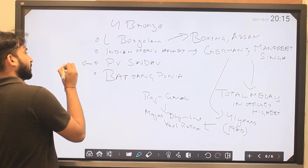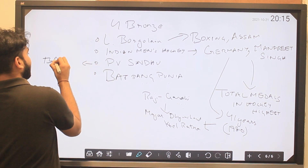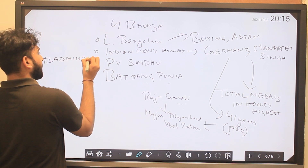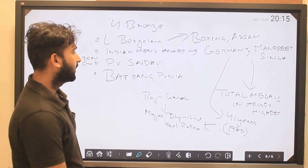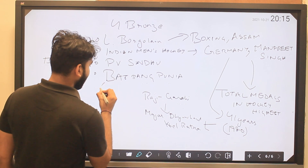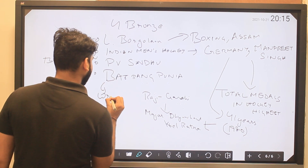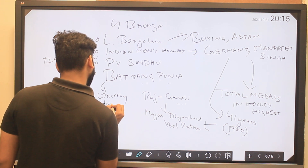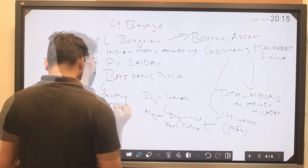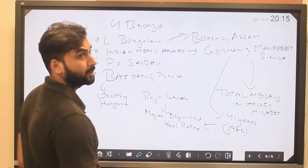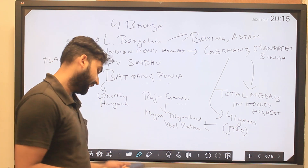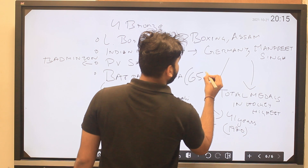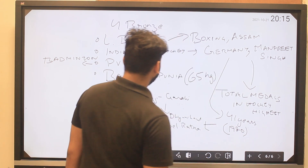PV Sindhu competed in badminton women's singles and won bronze. Bajrang Punia, from Haryana, won bronze in wrestling in the 65 kg weight category.